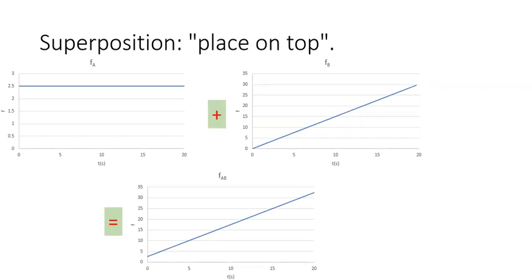Let's take the simple example of a constant function plus a linearly increasing function. Their superposition will be a linearly increasing function with a constant offset.